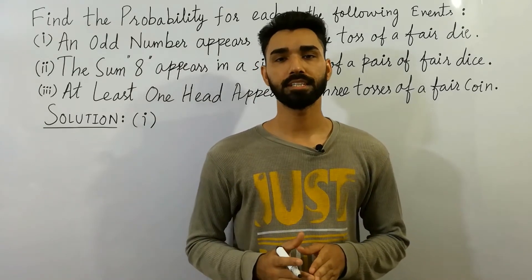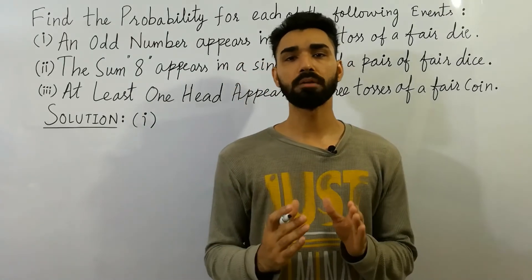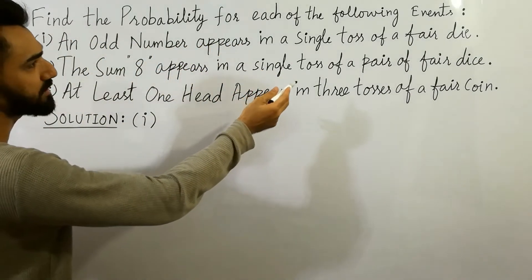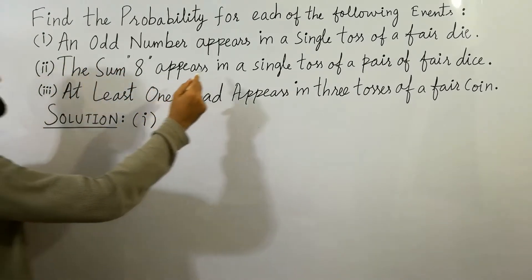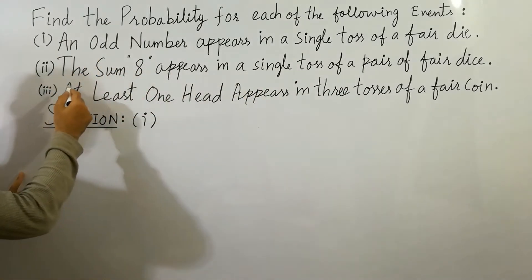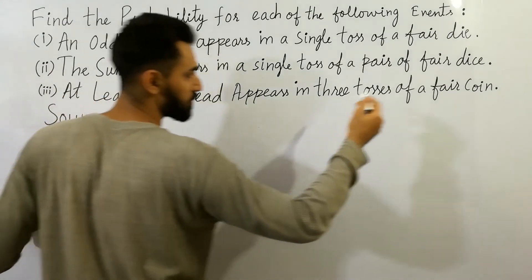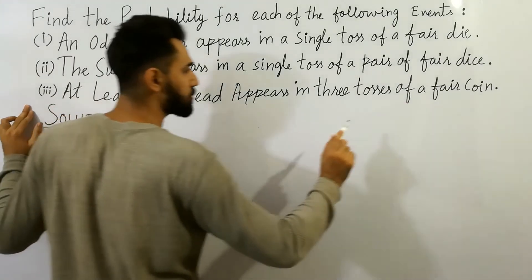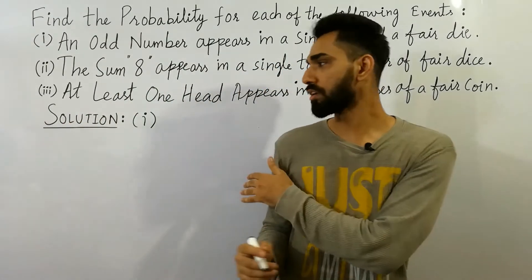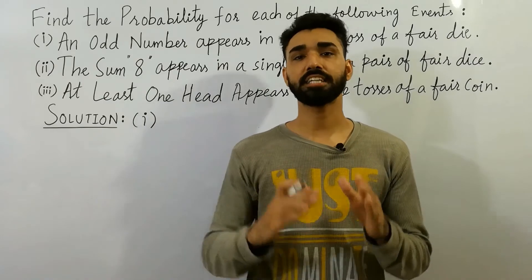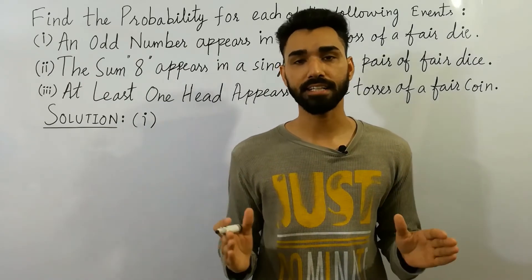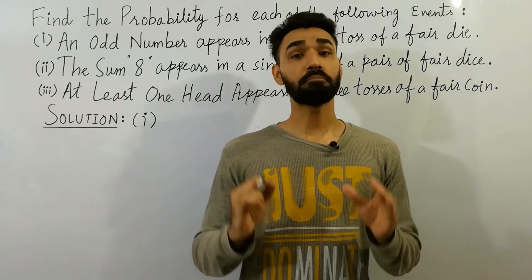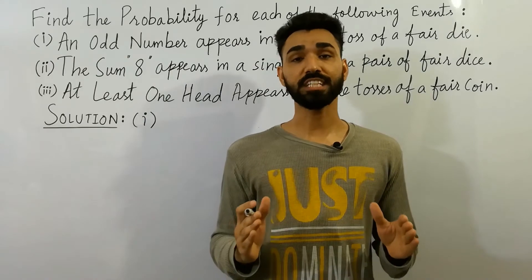Hey guys, today I am here to clearly explain how to solve problems of probability. First, find the probability if an odd number appears in a single toss of a player die. Number two, find the probability if sum eight appears in a single toss of a pair of dice. Number three, find the probability that at least one head appears in three tosses of a fair coin. I will solve all these questions with concepts, tricks and secrets that will make probability very easy. Don't miss this video — watch from start to end. Let's start the lecture.